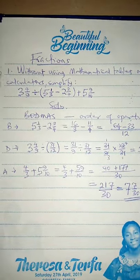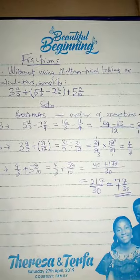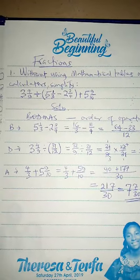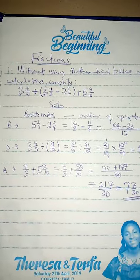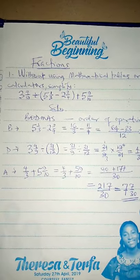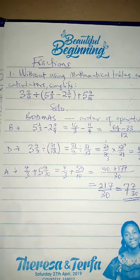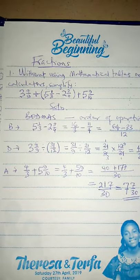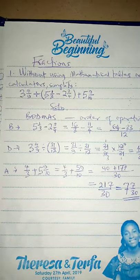In today's class I'll discuss fractions with you. Number one: without using mathematical tables or calculators, simplify this problem. You apply BODMAS for the order of operations. The operations are the division, subtraction, and addition signs. The order is: bracket first, then 'of', then division, multiplication, followed by addition and subtraction.